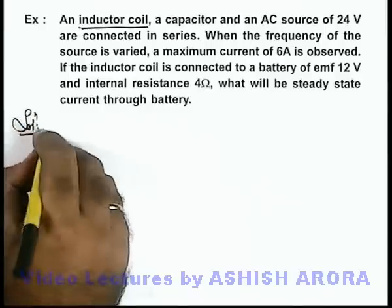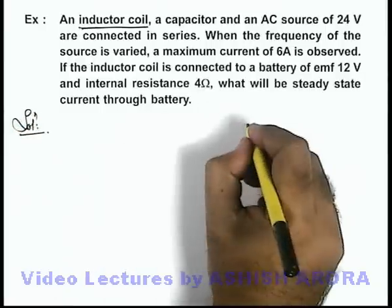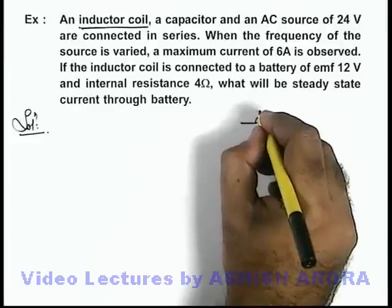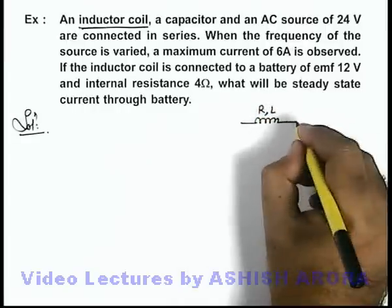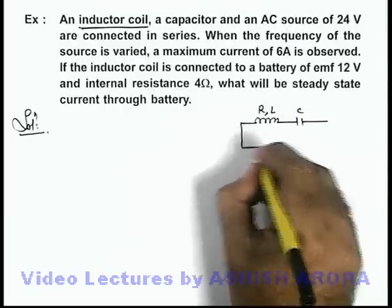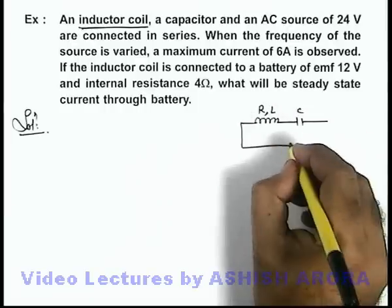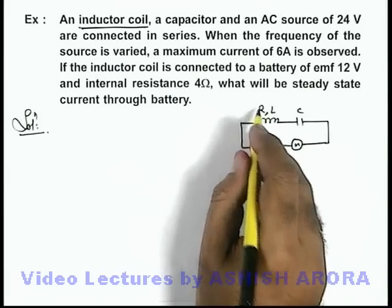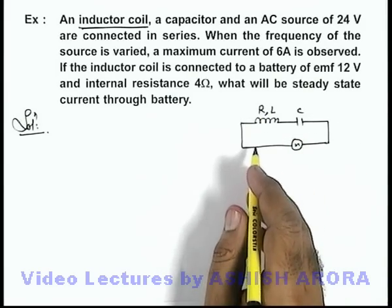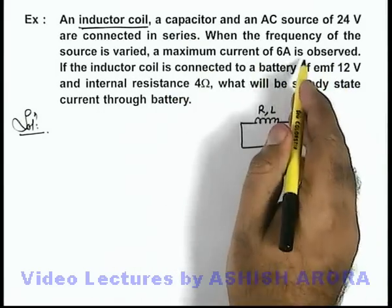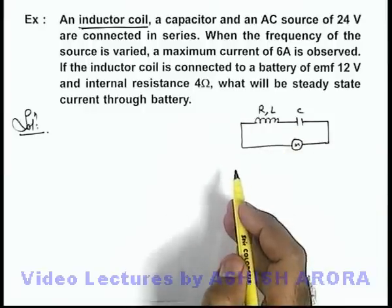Now in this situation, we can draw the circuit as a coil with some resistance and inductance. There must be some resistance in the coil because maximum current is observed — this happens only when there is a series combination of R, L, and C at resonance.